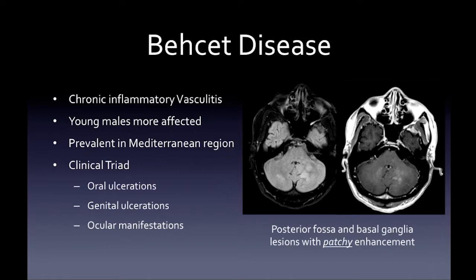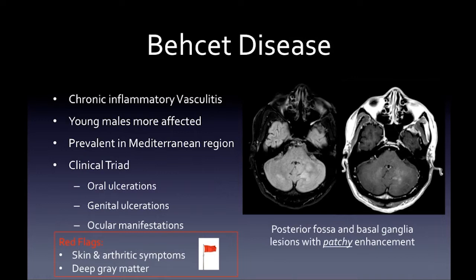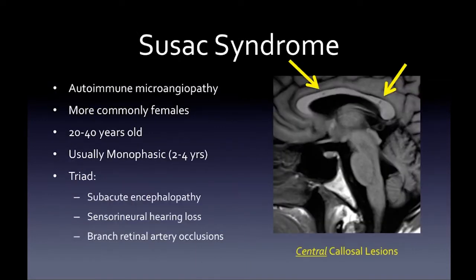Behcet disease is a rarer zebra vasculitis — a chronic inflammatory vasculitis more common in young males, prevalent in the Mediterranean region. The classic clinical triad is oral ulcerations, genital ulcerations, and ocular manifestations. Imaging shows FLAIR-bright lesions in the posterior fossa and basal ganglia with patchy enhancement, as opposed to the peripheral incomplete ring enhancement of MS. Red flags: skin and arthritic symptoms, lesions in the deep gray matter. Watch for meningoencephalitis and cerebral vein thrombosis. Treatment is immunosuppression.